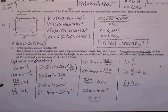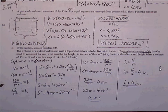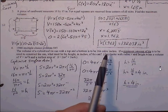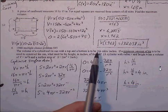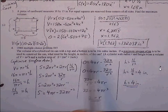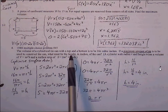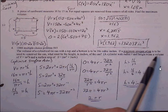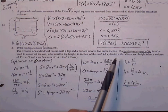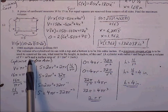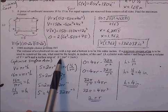Number four: the volume of a cylindrical tin with a top and bottom is to be 16π cubic inches. We need to find the height that minimizes the amount of tin used. The relevant formulas are: volume equals π r squared h, and surface area equals 2π r squared plus 2π r h.